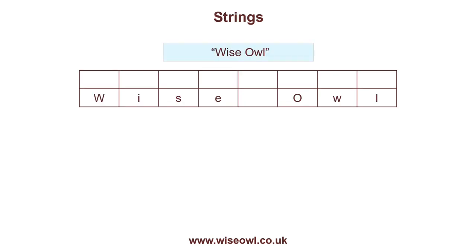A string works in the same way. Any string of text, like the words 'Wise Owl', can be represented as a sequence of letters beginning at letter 0 and carrying on until you reach the final letter. I can refer to any item in the sequence by its index number. So for example, the second item will be the letter S.